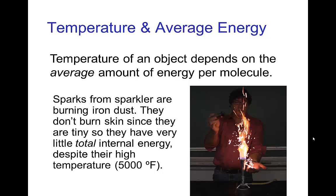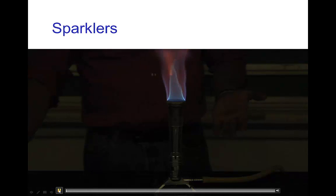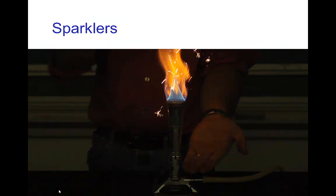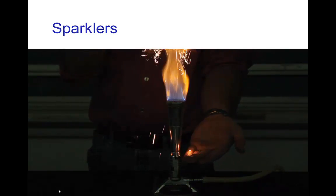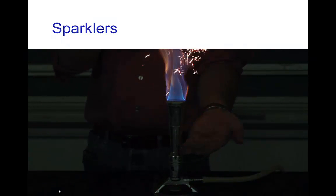To give you an example of this distinction, if I take sparks from a sparkler, those are burning iron dust. That burning iron dust has a very high temperature - several thousand degrees Fahrenheit. But if I sprinkle some of that dust onto my hand, and I'll show you that in this video, you see this dust is being lit by the flame and my hand is underneath and some of these sparks are landing on my hand.